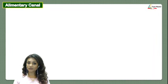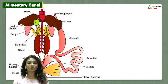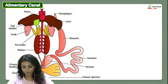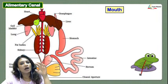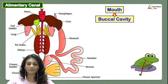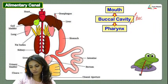Let's look at the different organs in the alimentary canal of the frog using the NCERT textbook diagram. Although we saw a fancier diagram earlier, this is the one whose labels you need to remember. The first part of the alimentary canal begins with the mouth. Inside the mouth is the buccal cavity, also called the buccopharyngeal cavity.